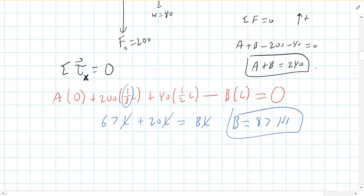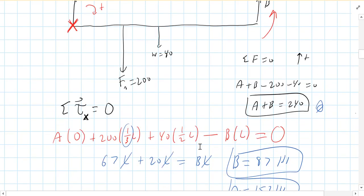And then we know A plus B is 240. So we know that A has to be about 153 pounds. So that person on the left, they're definitely carrying a lot more of the load than person B.